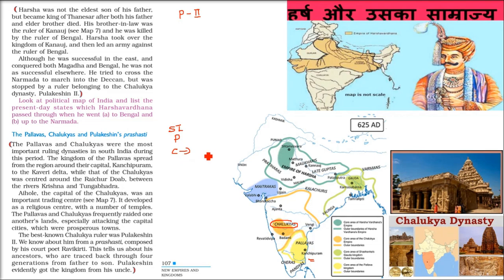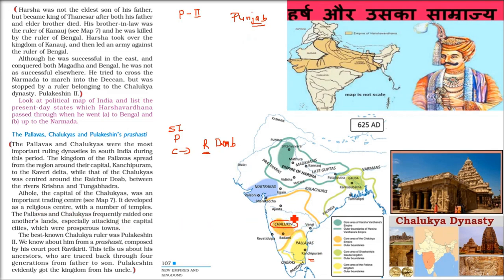The area of the Chalukyas was at the Raichur Doab. Doab means where two rivers meet. For example, Punjab means where rivers meet — five rivers meet, that is why it is called Punjab. Raichur Doab refers to two rivers: Krishna and Tungabhadra. Please remember — the Chalukyas were between the Krishna and Tungabhadra rivers.